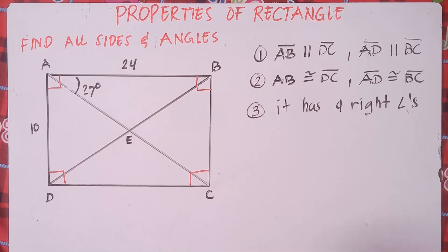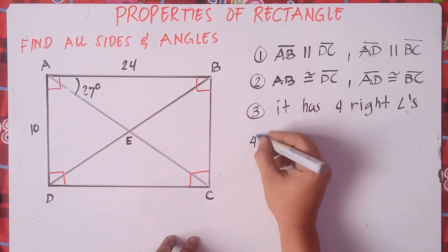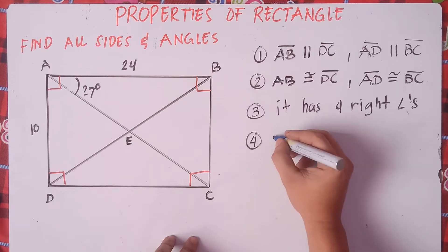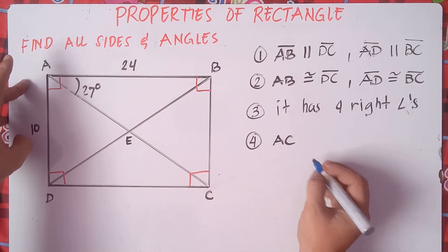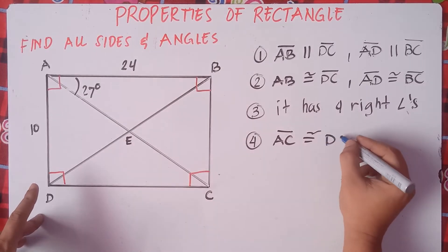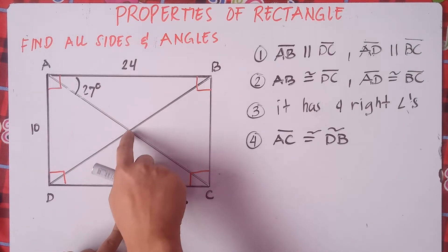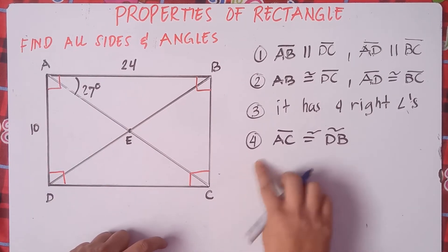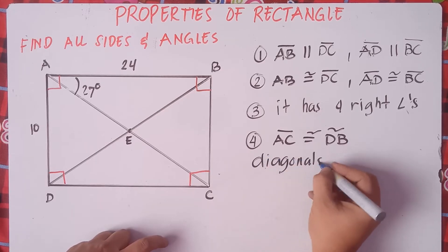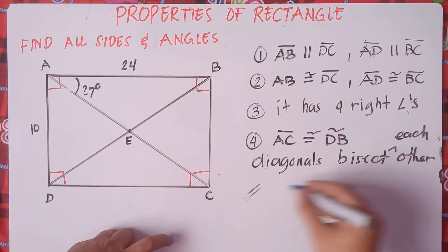Number four: the diagonals are the same. So we can conclude that AC is congruent to line DB. And the fifth property is that diagonals bisect each other — meaning they intersect and meet at the midpoint, at point E here. Diagonals bisect each other, and they are equal.